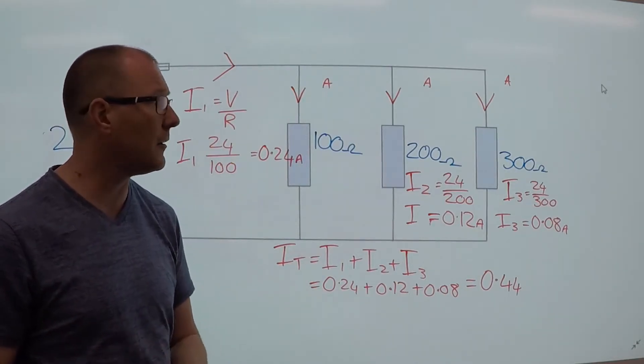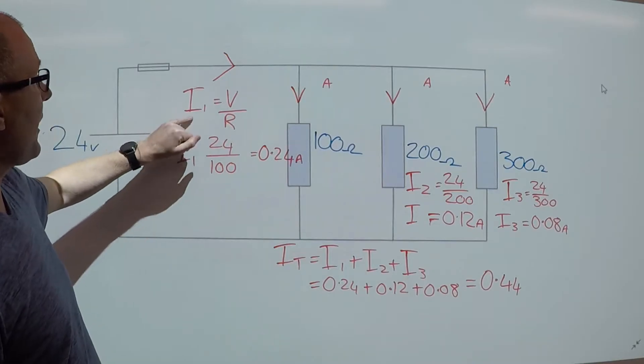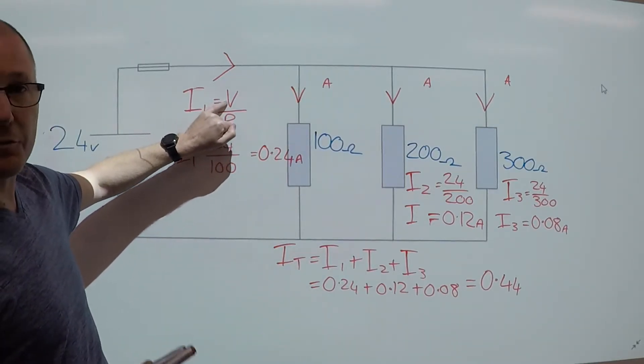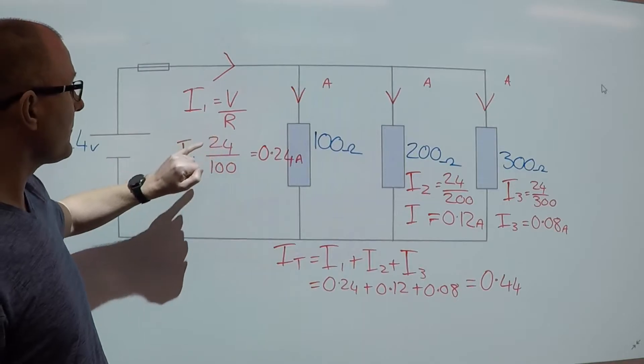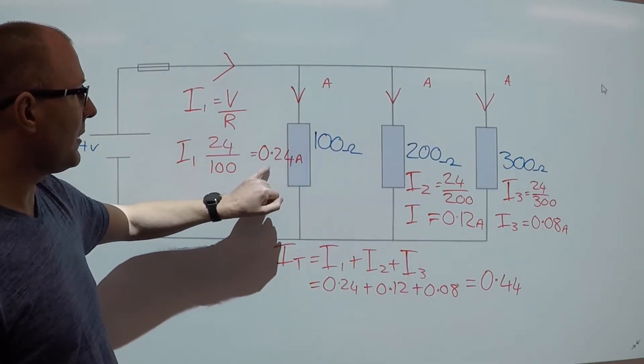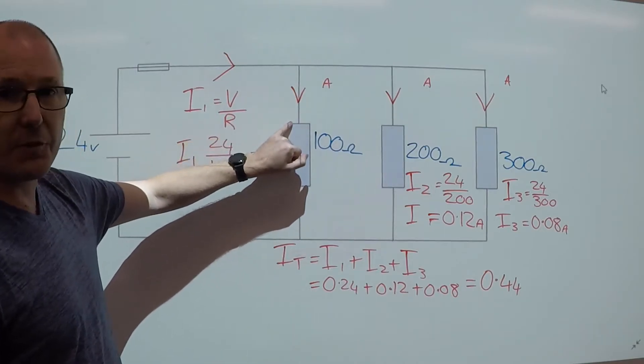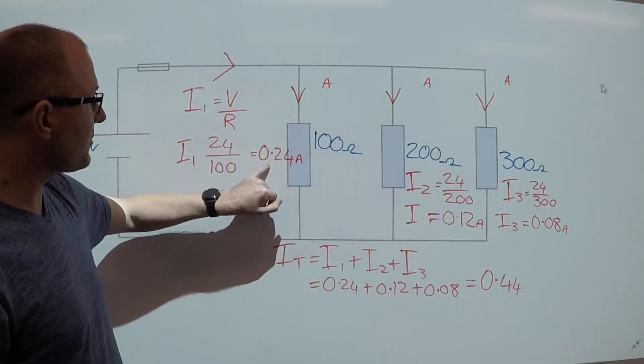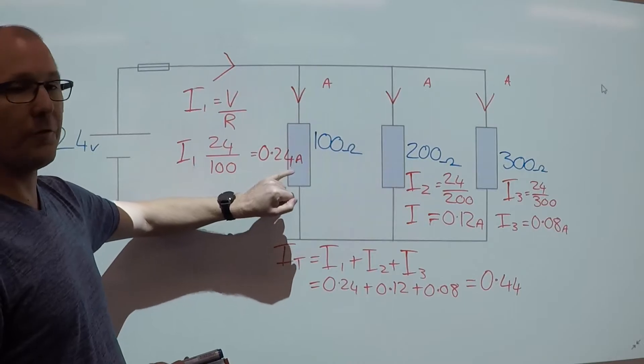What we do is we use current 1 equals voltage divided by the resistance. And that gives us 24 volts divided by 100, and going through this first part of the circuit is 0.24 amps.